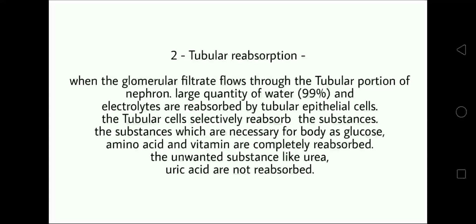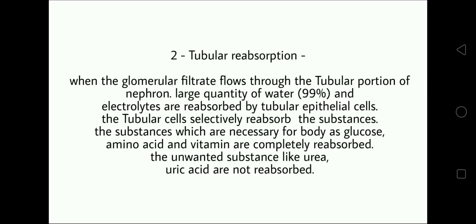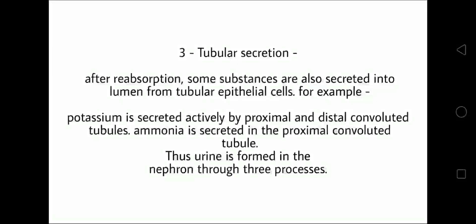Tubular Reabsorption. When the glomerular filtrate flows through the tubular portion of the nephron, a large quantity of water — approximately 99% — and electrolytes are reabsorbed by tubular epithelial cells. The tubular cells selectively reabsorb substances. Substances necessary for the body, such as glucose, amino acids, and vitamins, are completely reabsorbed. Unwanted substances like urea and uric acid are not reabsorbed.